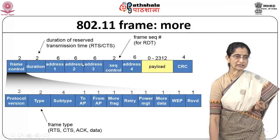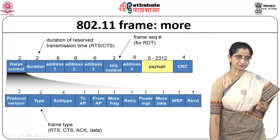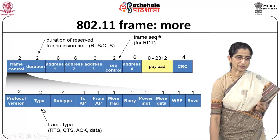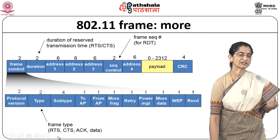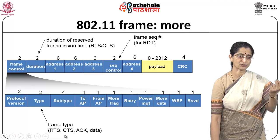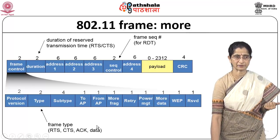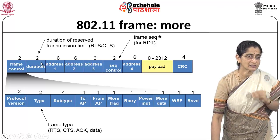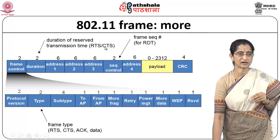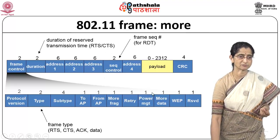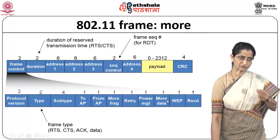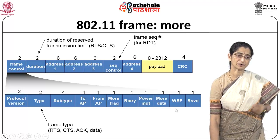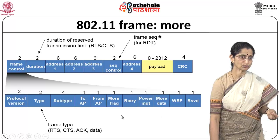Looking at the frame control field: there is a type field indicating whether it is an RTS, CTS, ACK, or data packet. The duration field indicates for how long the channel is being reserved, used when an RTS/CTS packet is being sent. There are also fields for power management, more data flags, security purposes, and other control information.